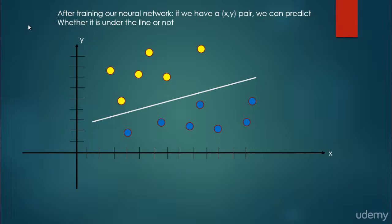So for example, after training our neural network, if we have another x-y pair, we can predict whether it is under the line or not.